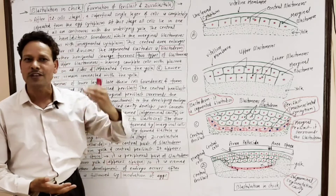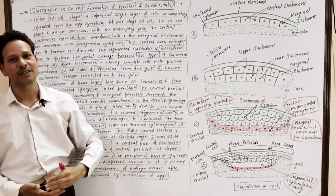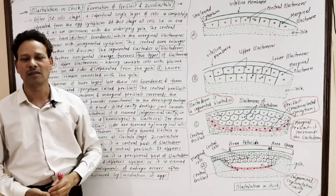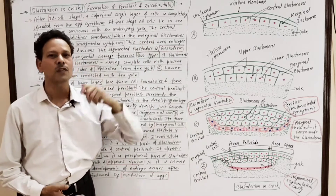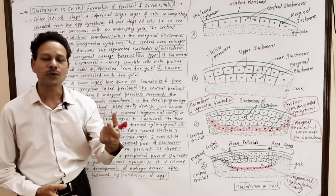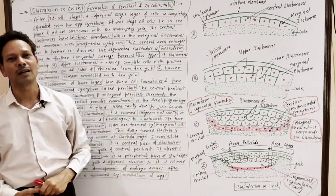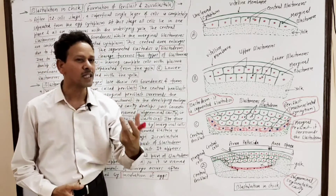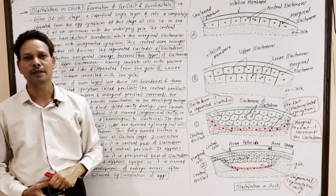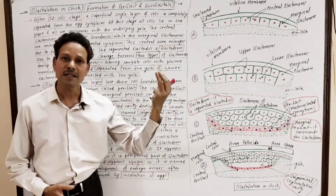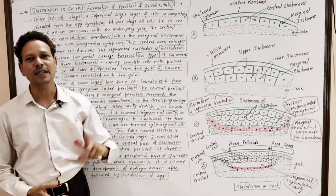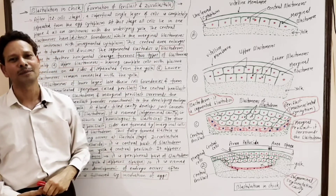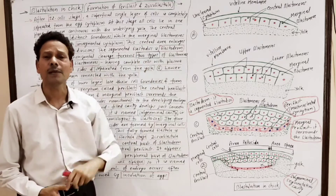In today's lecture we will cover blastulation in chick. In the case of birds, the blastula is a disco blastula, as this entire process occurs inside the very small active part of cytoplasm that lies in a germinal disc — the blastodisc. That is why it is called disco blastula.